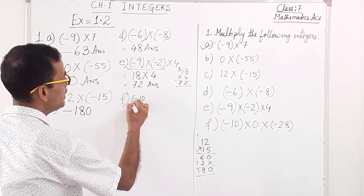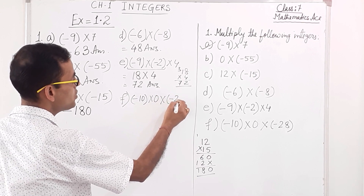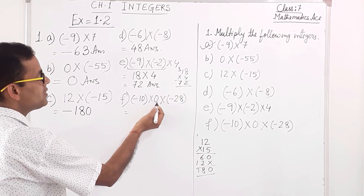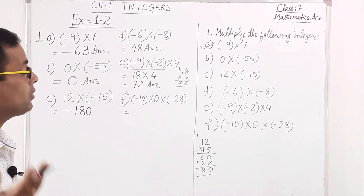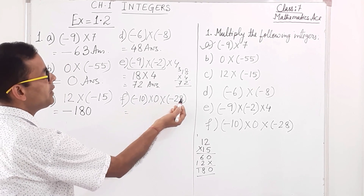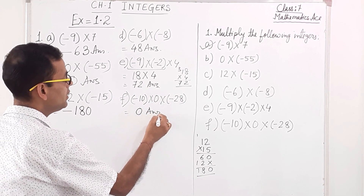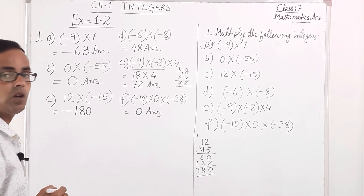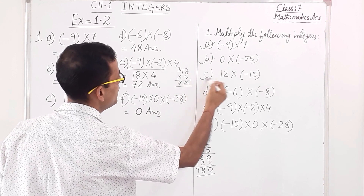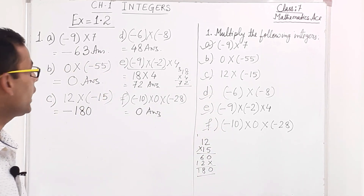Number f: minus 10 into 0 into minus 28. Here one 0 is there. Anything multiplied with 0 is 0, and 0 multiplied by any number is also 0. So ultimately the answer is 0. Question number 1, all sums A, B, C, D, E, F are done.